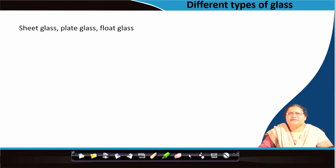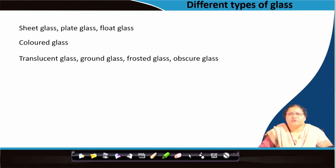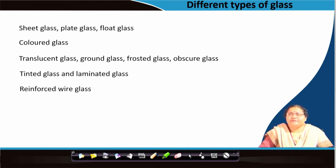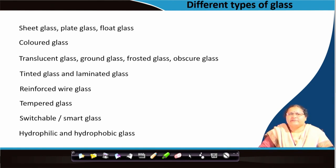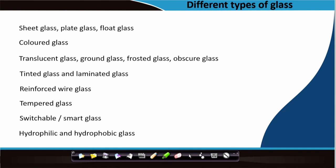Let us look into the different types of glass, which we will elaborate on mostly in the next lecture. We have sheet glass, plate glass, float glass, colored glass, translucent glass, ground glass, frosted glass, obscure glass — which are almost the same kind of items. We have tinted glass, laminated glass, reinforced wired glass, tempered glass, switchable smart glass, and hydrophilic and hydrophobic glass. Different types of buildings with different purposes actually use so many types of glass, which we will elaborate on in our next lecture. Thank you.